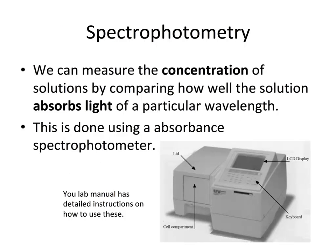In your metabolic biochemistry practicals, you will need to measure the concentration of various enzymes, proteins, and other metabolites. The way we commonly do this is to use spectrophotometry. Using spectrophotometry, we can measure the concentration of solutions by comparing how well the solution absorbs light of a particular wavelength. This is done using a machine called an absorbance spectrophotometer. Your lab manual has detailed instructions on how to use the various spectrophotometers in the laboratory.